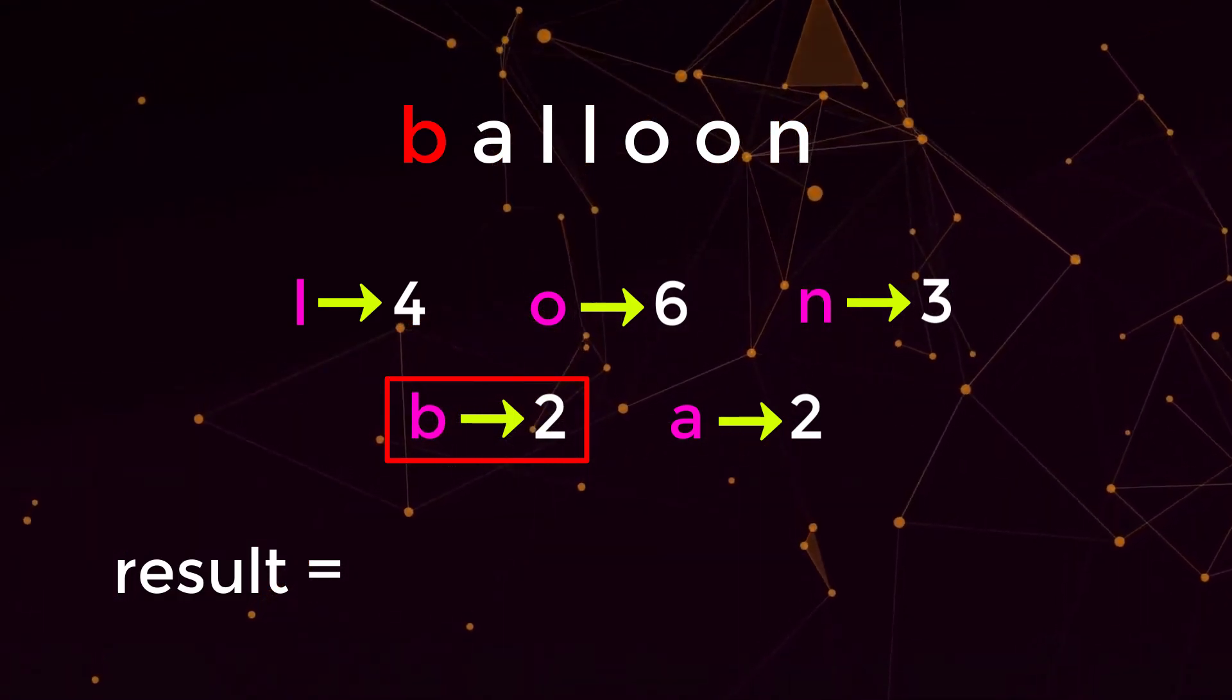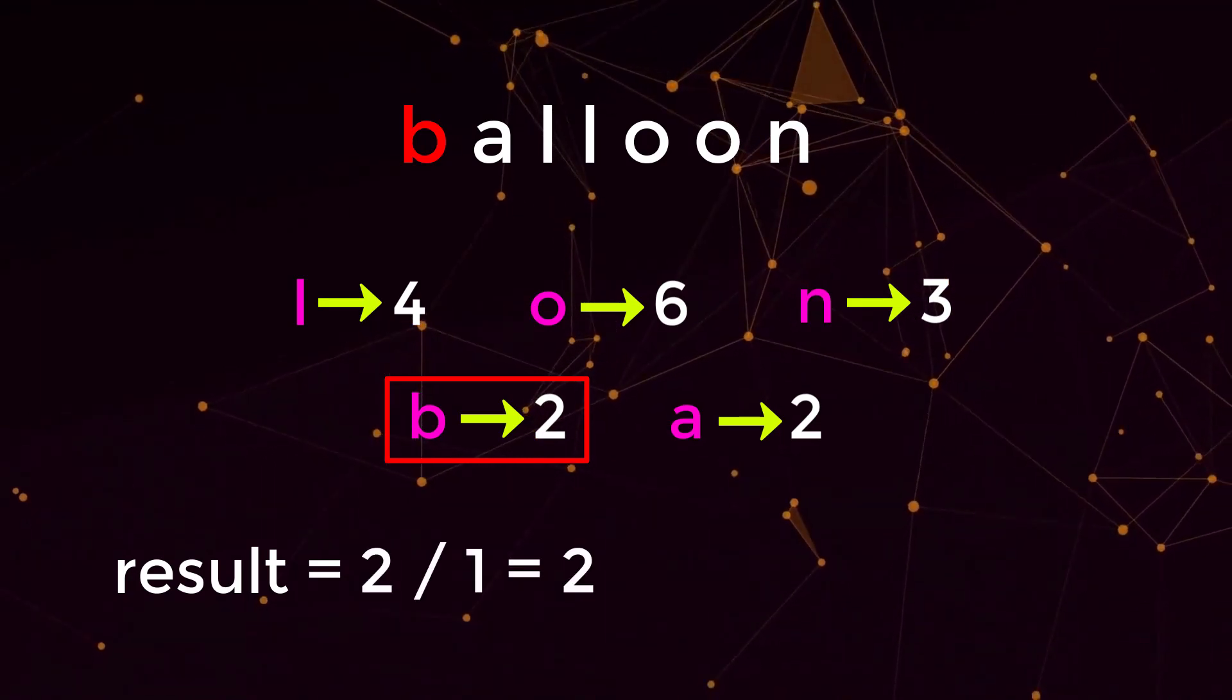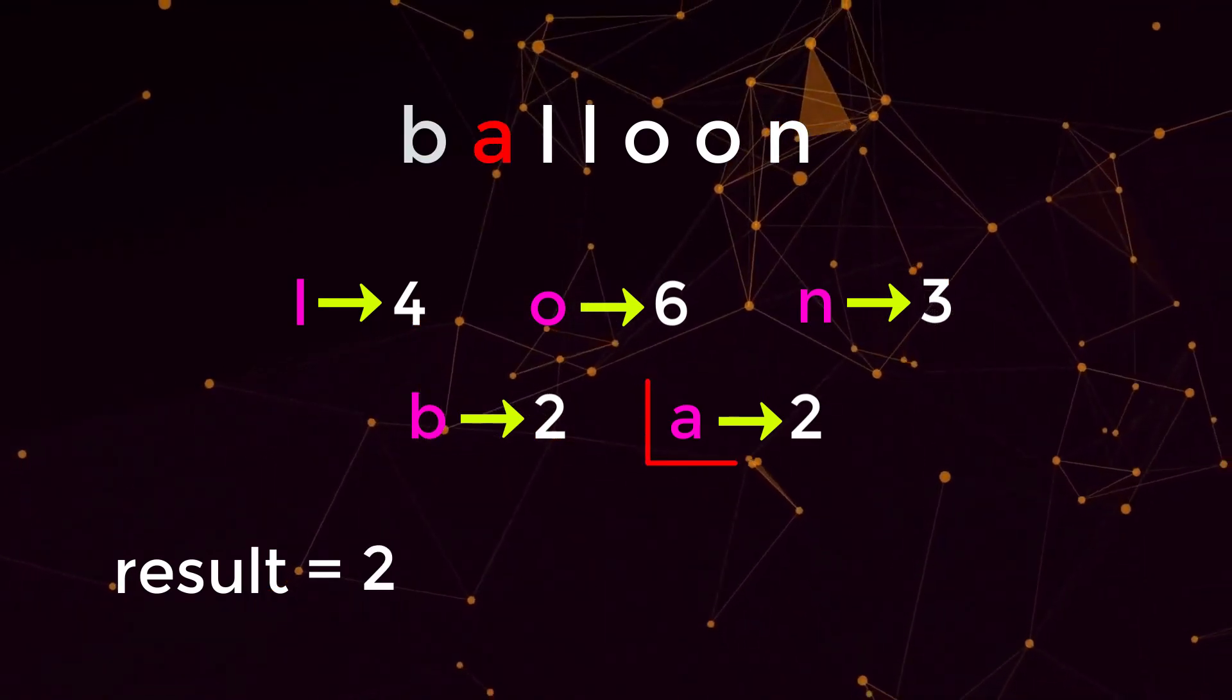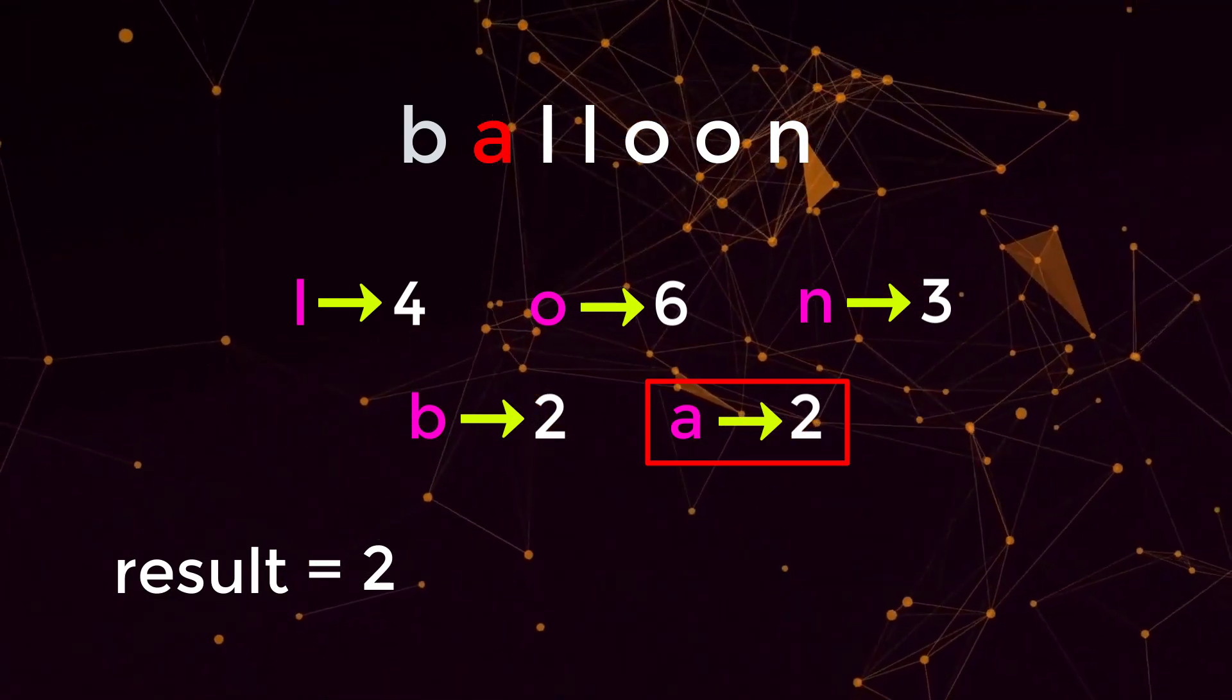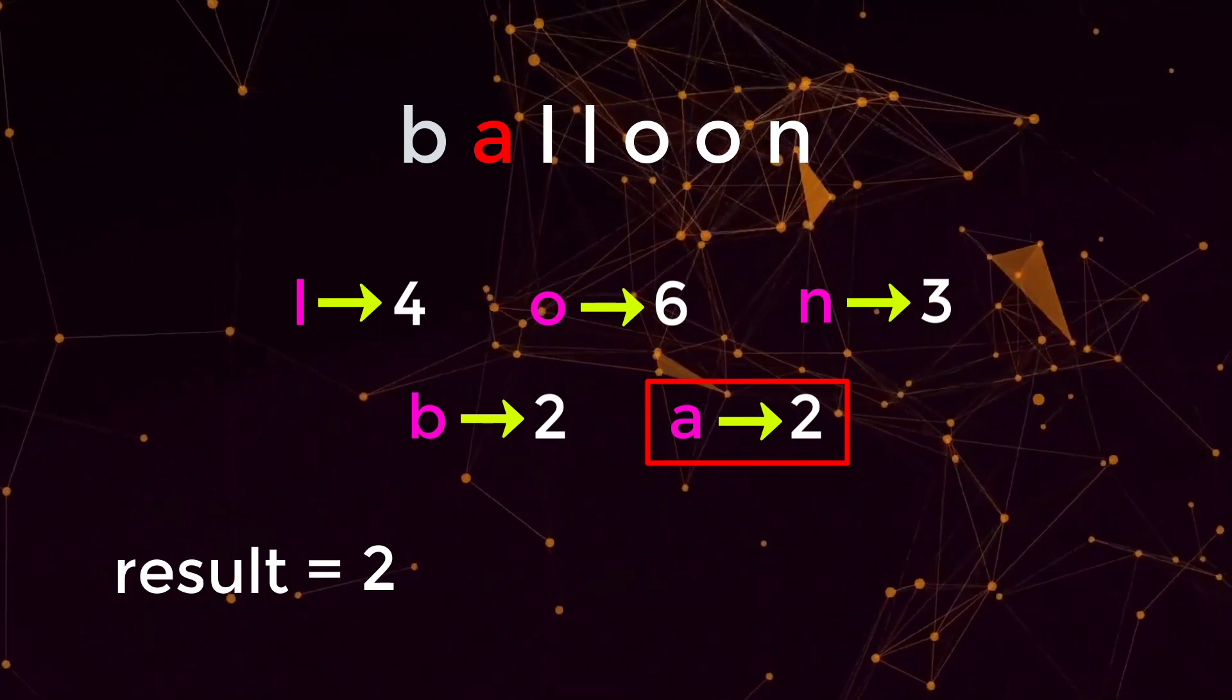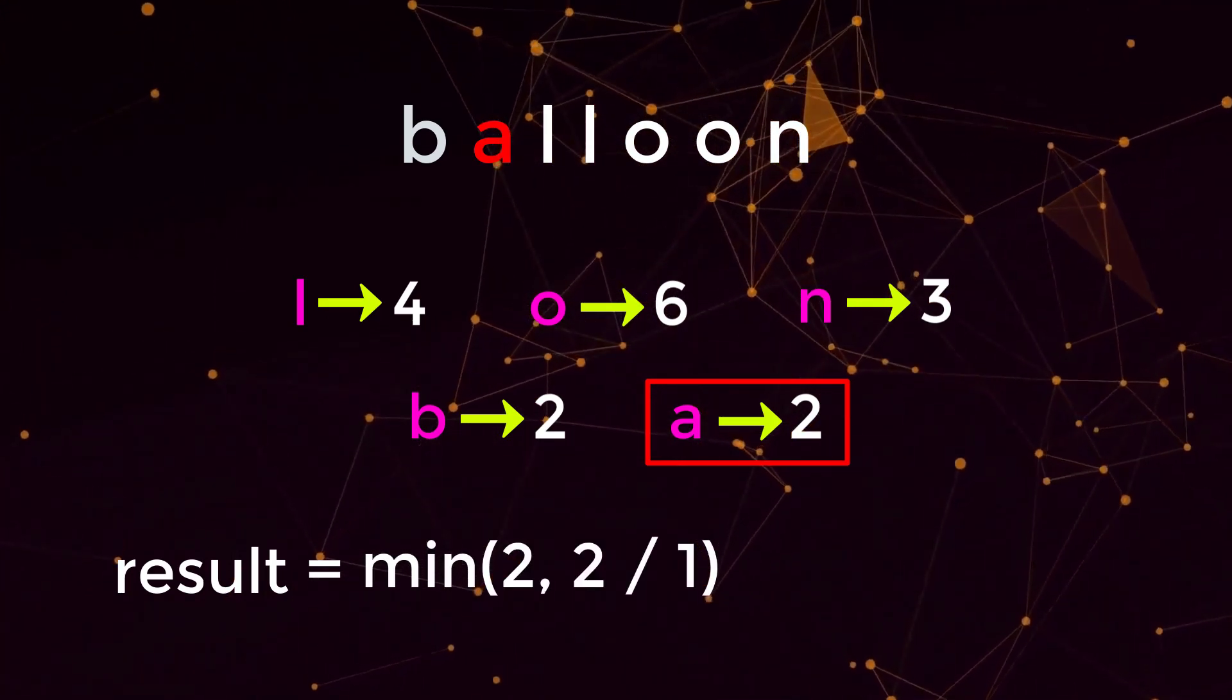Balloon has only one occurrence of b, so that means we can make up two balloon words with the character b. We look up character a at index zero, which also has a value of two. Balloon only has one occurrence of the character a, so if we do the minimum between two and two, that would just be two.